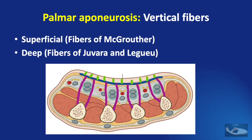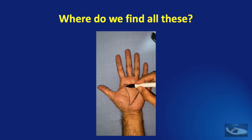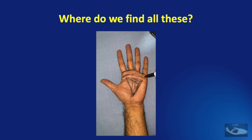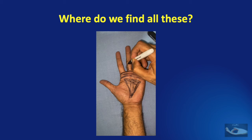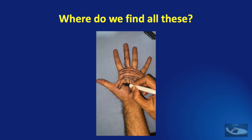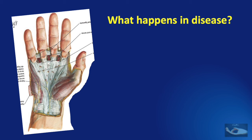In the palm, we find the palmar aponeurosis with the longitudinal fibres of the pre-tendinous bands, the proximal deep transverse fibres of Skoog, the distal transverse fibres of the natatory ligament, the lateral digital sheaths, the Grayson's ligaments that are volar to the neurovascular bundle, and the Cleland's ligaments that are dorsal to the neurovascular bundle, and the distal and proximal commissural ligaments in the thumb web. Having seen the fascial system of the hand and fingers, what happens to this fascia in diseases like Dupuytren's contracture where this fascia is involved?